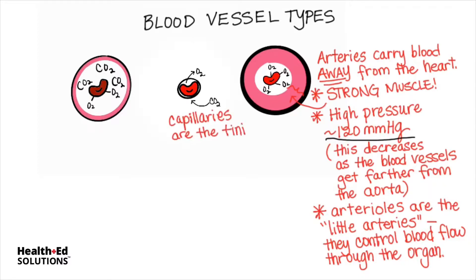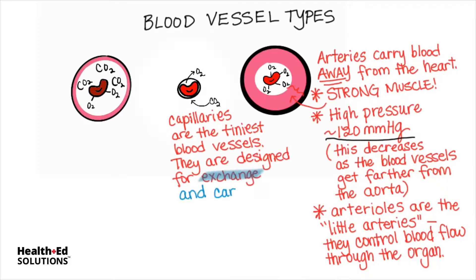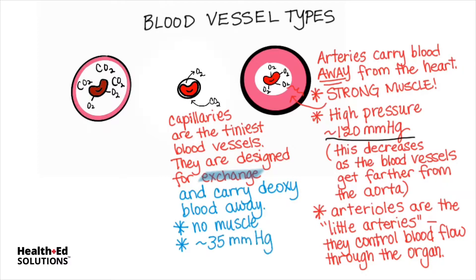Capillaries are the tiniest blood vessels. They are so small they're microscopic. They're designed for exchange, so they carry deoxygenated blood away from an organ. Unlike the very muscular arteries, they have no muscle, which allows them to carry out their function of exchange. Blood pressure is going to be around 35 millimeters of mercury at the start of a capillary bed, and it drops as it goes through. Some capillary beds, like the ones in the kidneys, require a significantly higher blood pressure at the start in order to perform filtration.